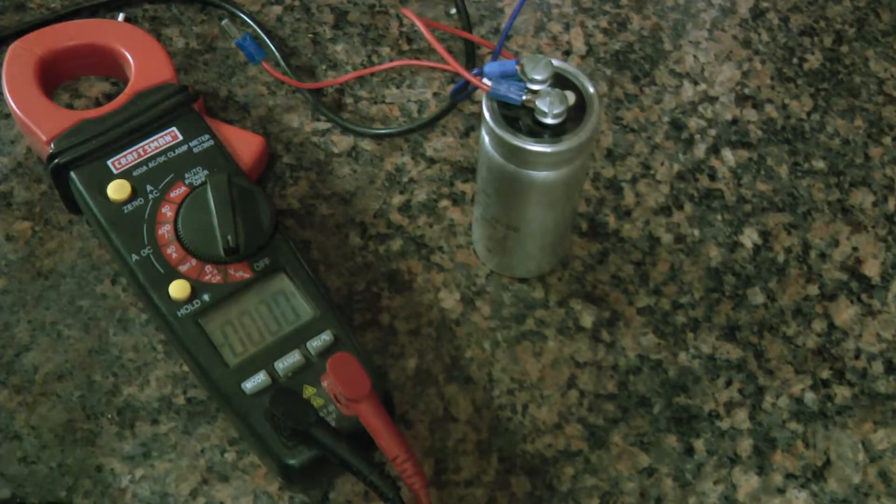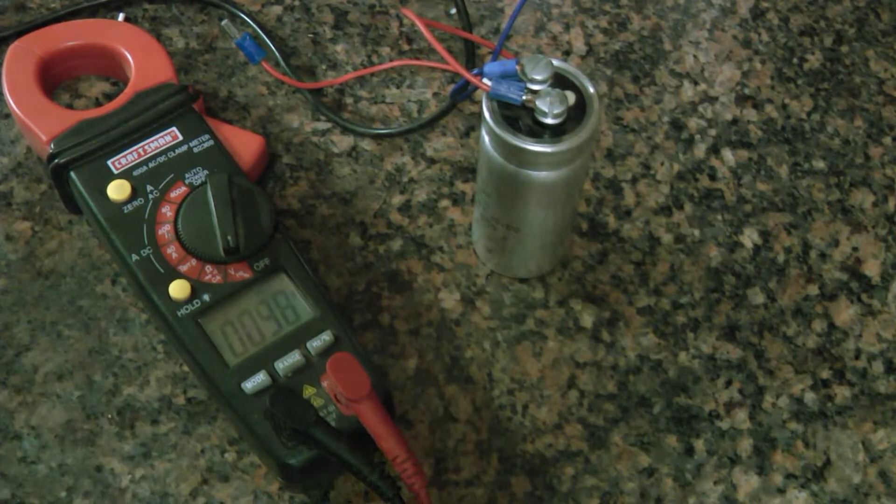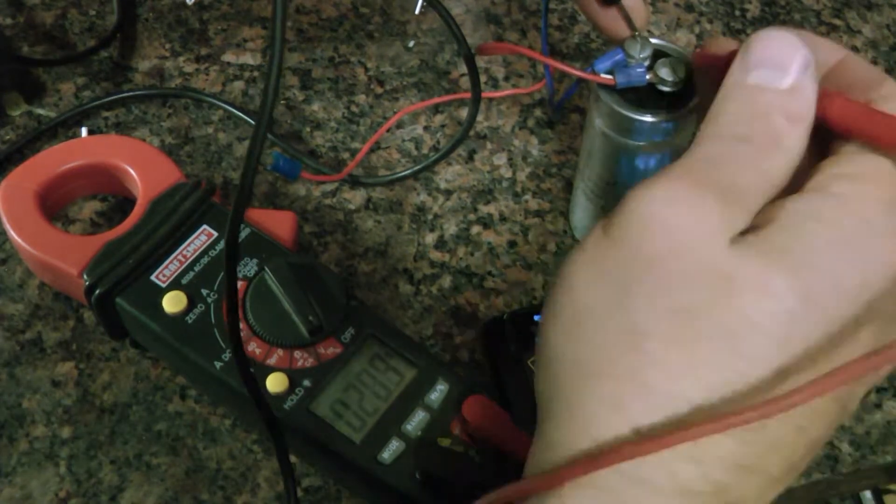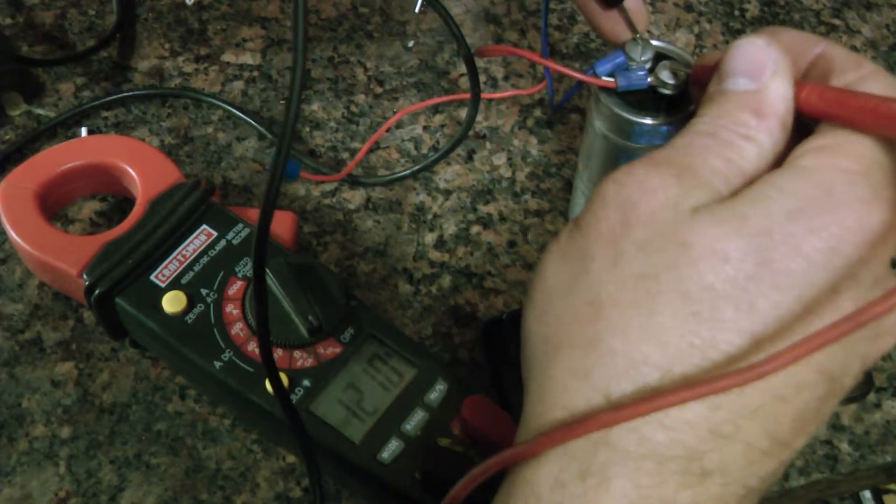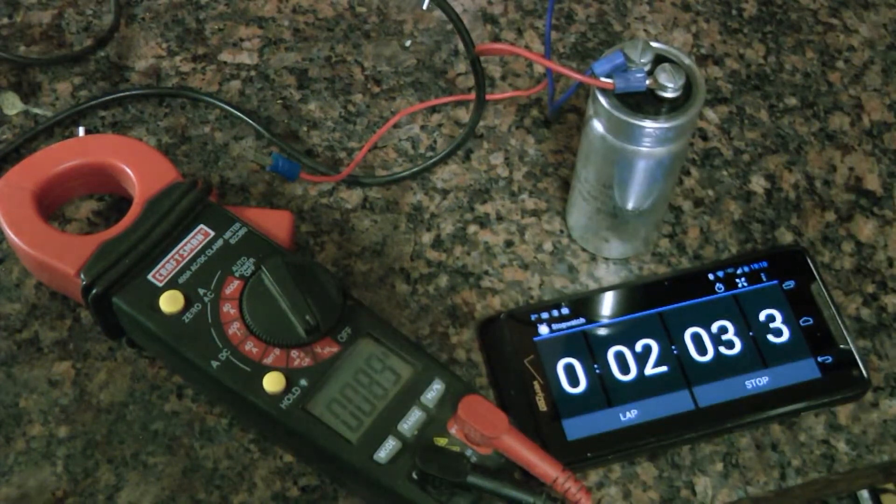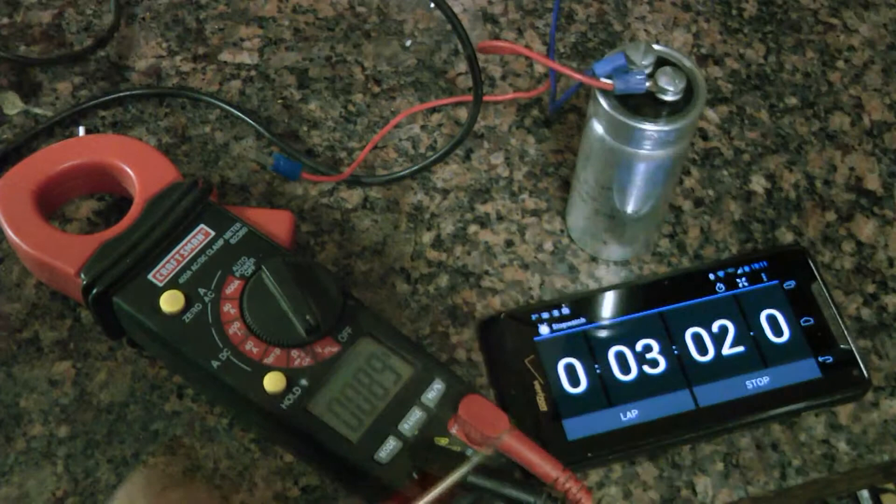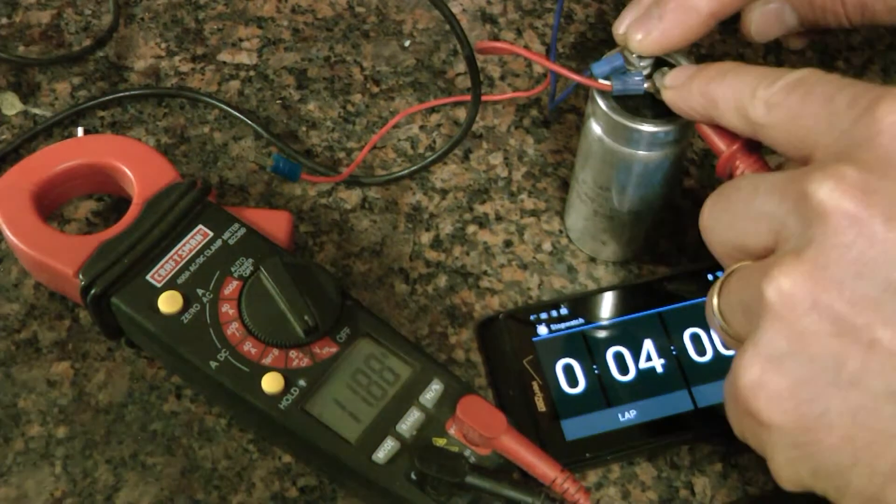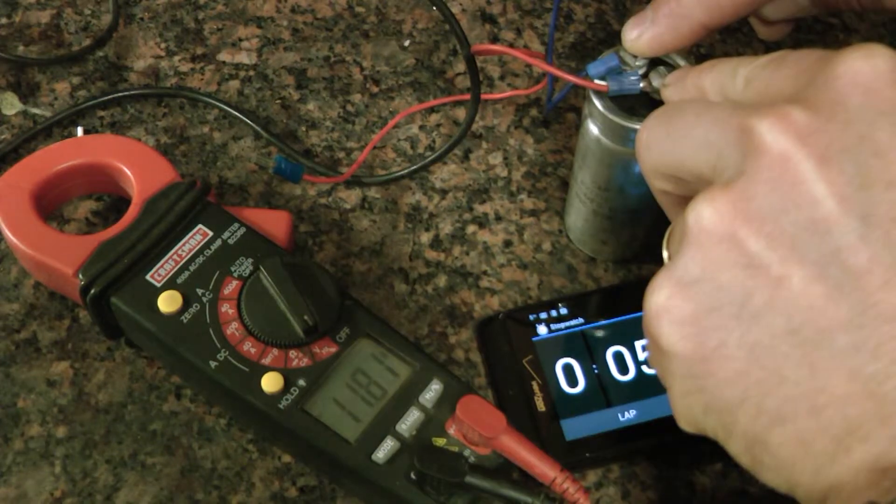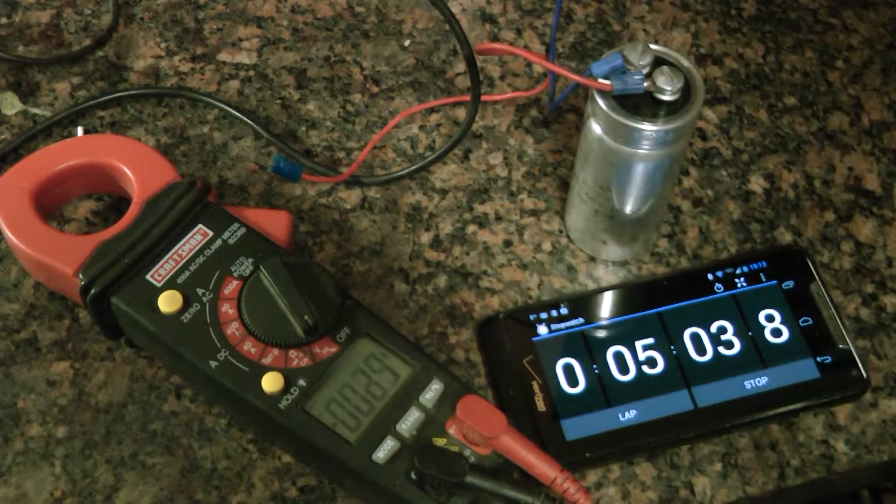Now I'm going to stick a stopwatch next to it. We'll see that we've got 12.1, 12.0 volts, 11.93 volts, 11.88 volts, 11.8 volts at five minutes.